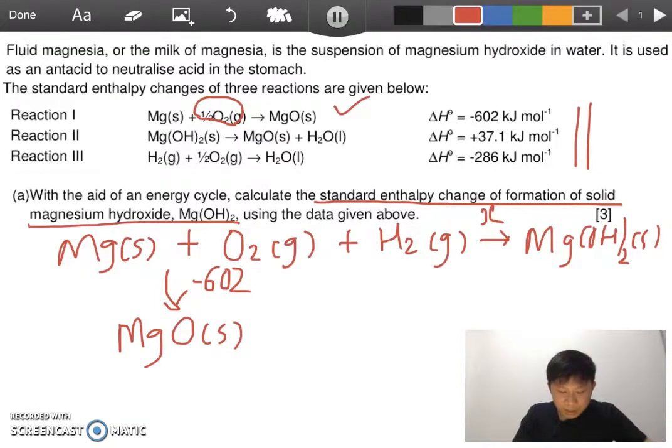After that we need to put in the next reaction. I will choose the H2 plus the half O2. Remember just now we used half of the oxygen, now we use half more. So from the H2 we arrow down, reaction three.